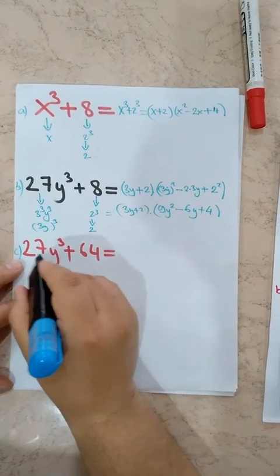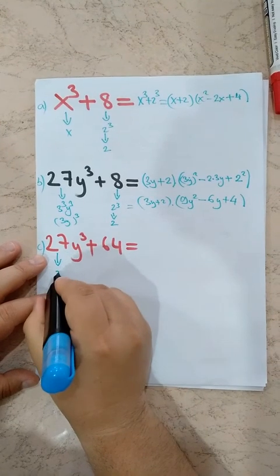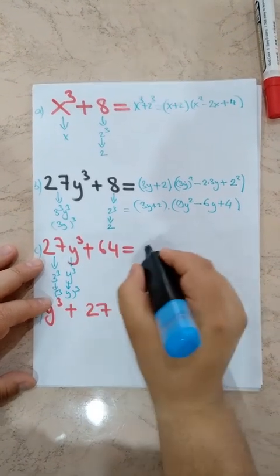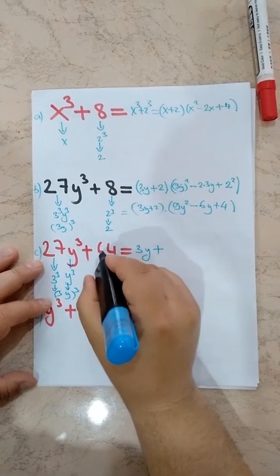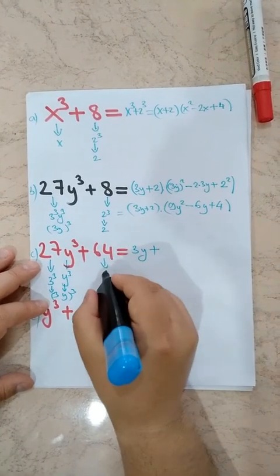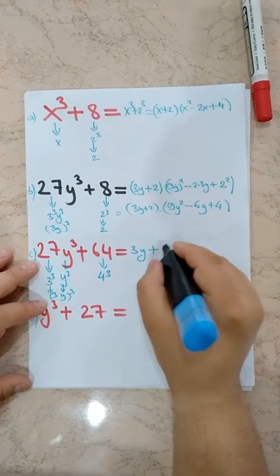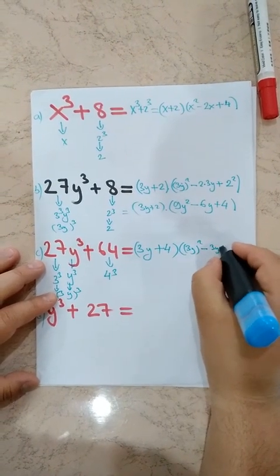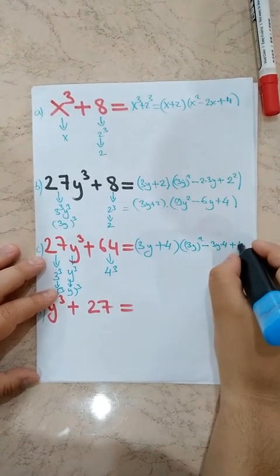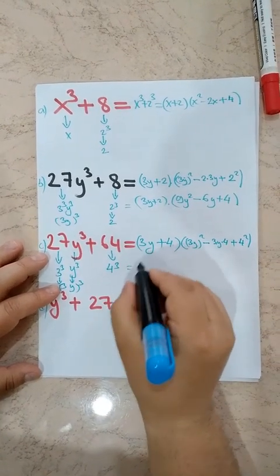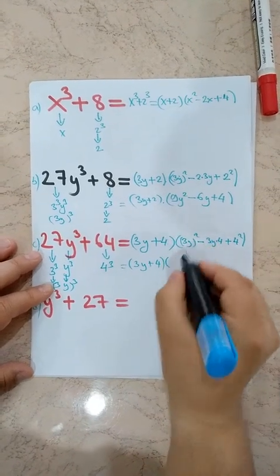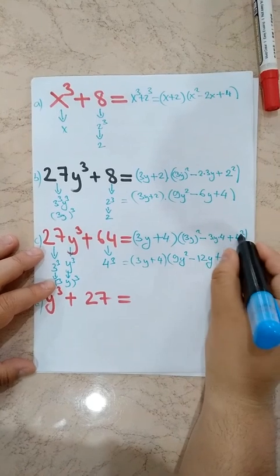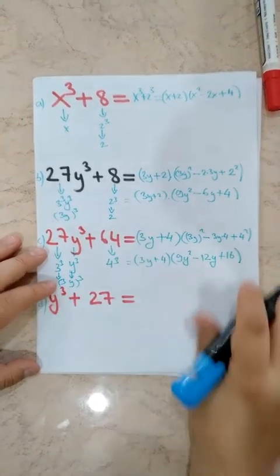Then, same logic: 27Y cubed plus 64. 27 — which number cubed? — 3 cubed, so 3Y is first term. 64 — which number cubed? — 4 cubed, so 4 is second term. We write 3Y plus 4 times 3Y squared minus 3Y times 4 plus 4 squared. In standard form: 3Y plus 4 times 9Y squared minus 12Y plus 16.